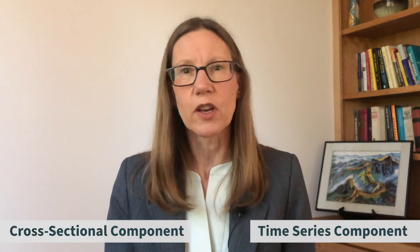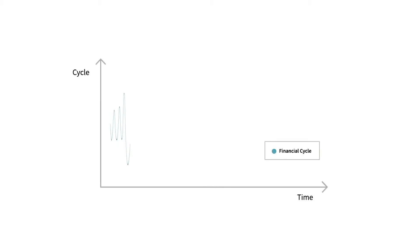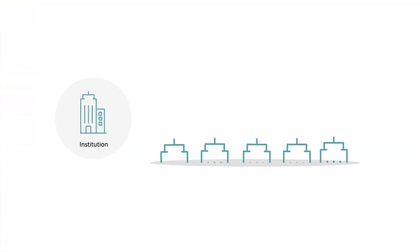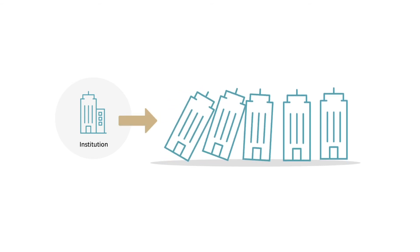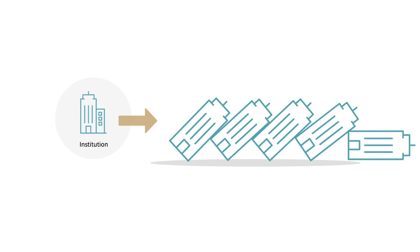To be able to thwart systemic risks with policies and regulation, oversight bodies and regulators have found it useful to consider two components of systemic risk: the time series component and the cross-sectional or structural component. The time series component refers to risks that develop over time, resembling a cycle not unlike a business cycle. The cross-sectional component refers to the notion that multiple institutions or markets face difficulty nearly simultaneously, and one default can lead to multiple defaults, like a domino effect.